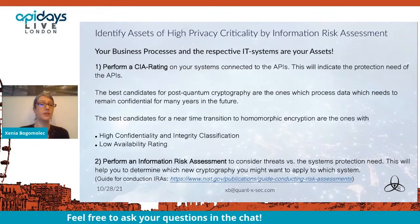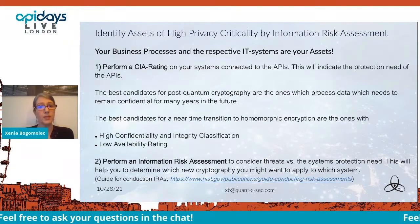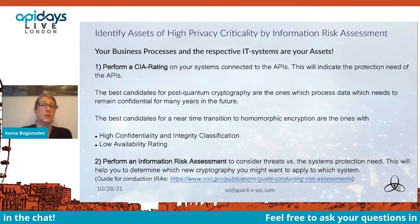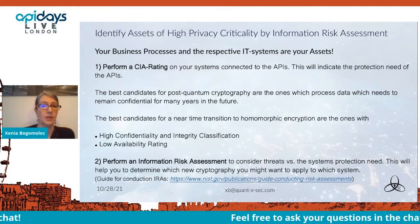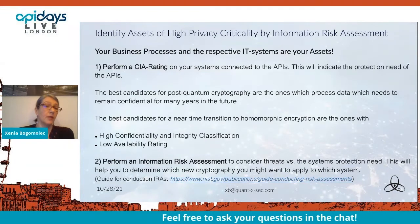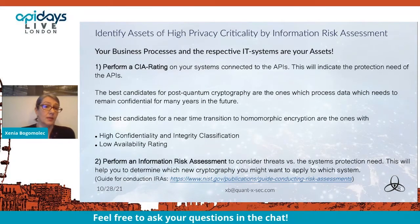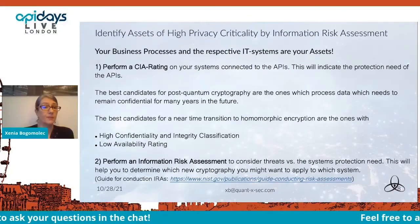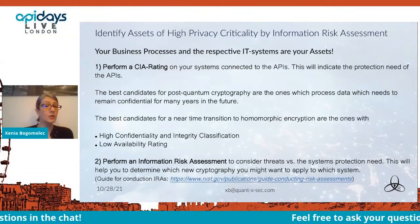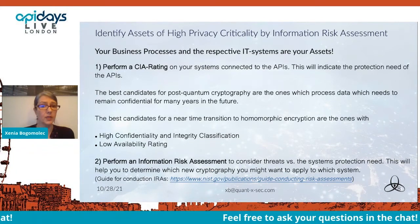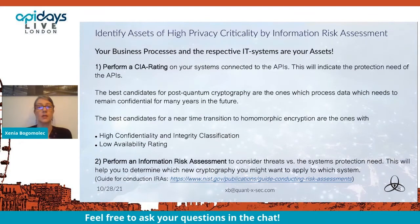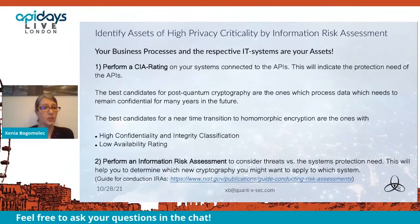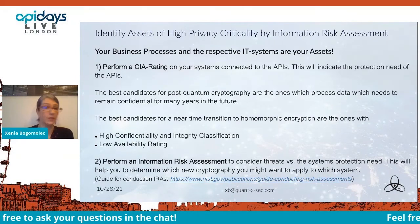How can you identify assets of high privacy criticality? By performing an information risk assessment as a first step. Identify what your asset is in the business process and the respective IT systems, then perform a CIA rating on your systems connected to the APIs. This will indicate the protection need of the APIs themselves.